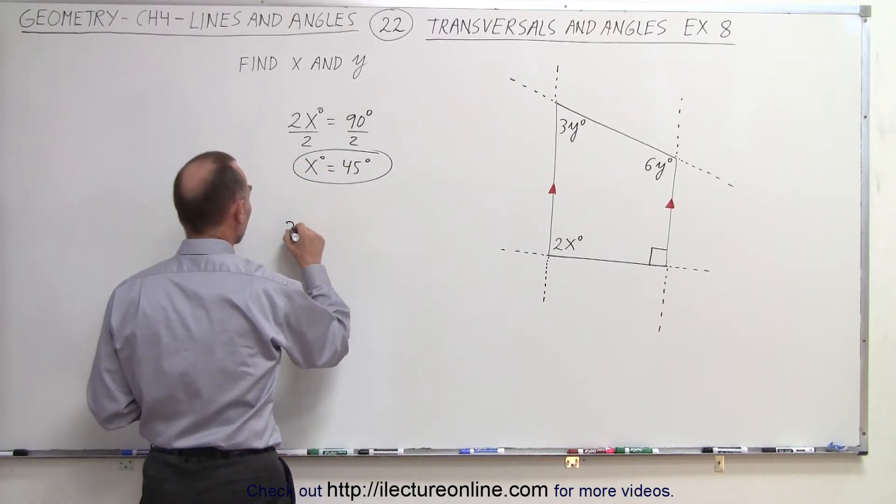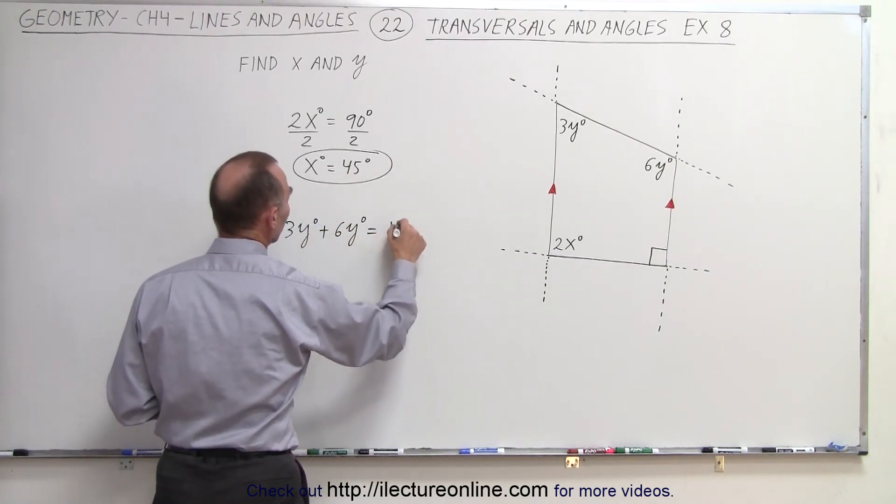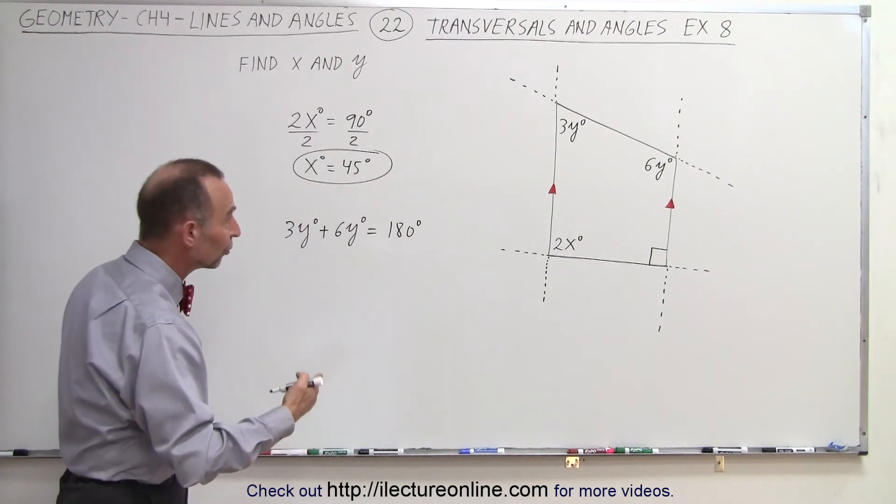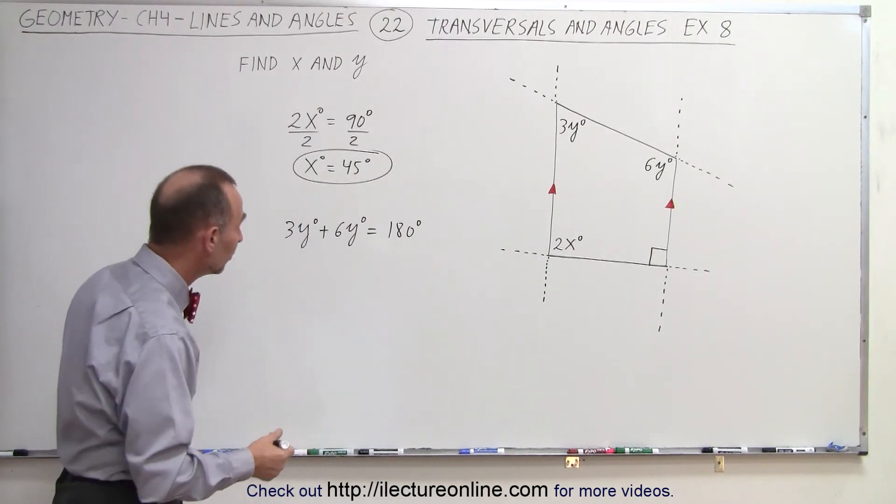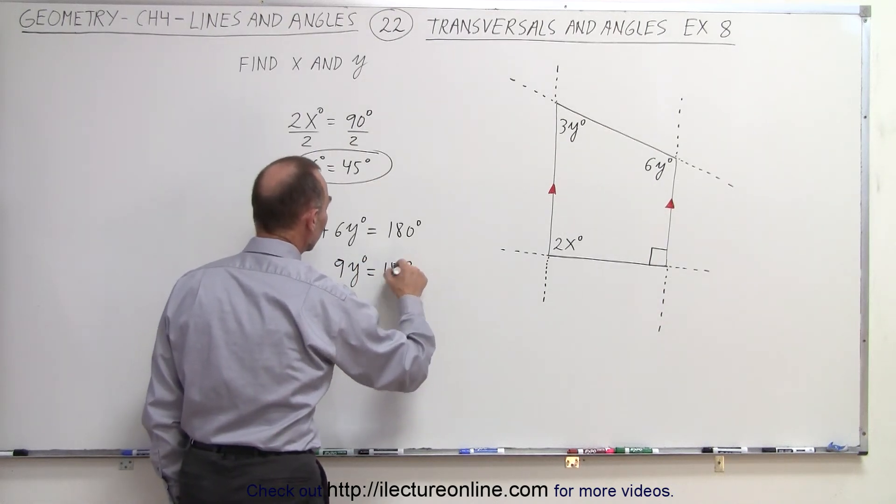Consecutive interior angles do indeed add up to 180 degrees, which means that 9 times y degrees equals 180 degrees.